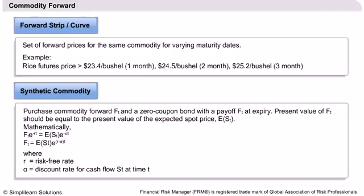Instead of purchasing a commodity, one can construct a synthetic commodity by purchasing a commodity forward and a zero-coupon bond that pays the forward price at maturity. Deducing from the arbitrage-free concept, the present value of the forward price should be equal to the present value of the expected spot price. The mathematical expression for this equilibrium is given in the slide.